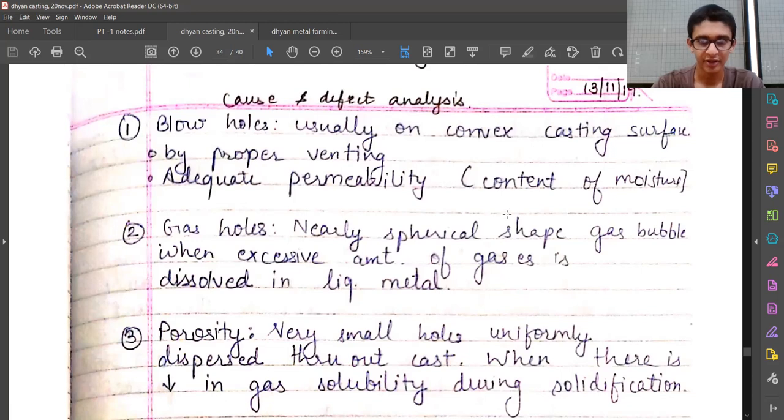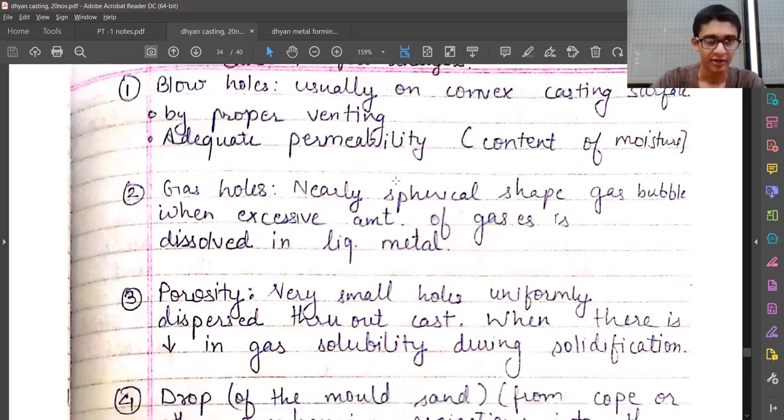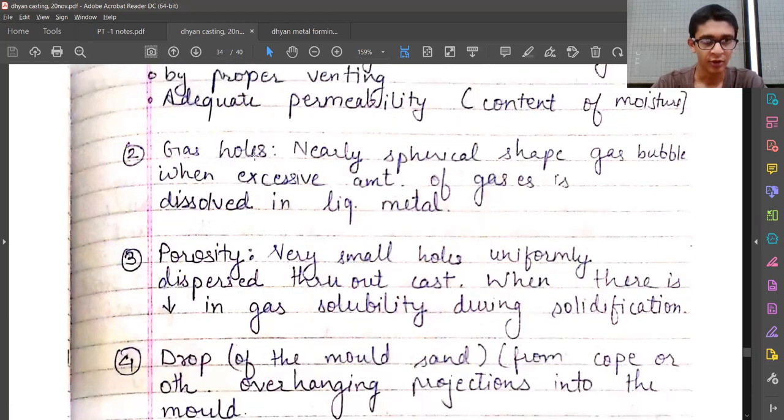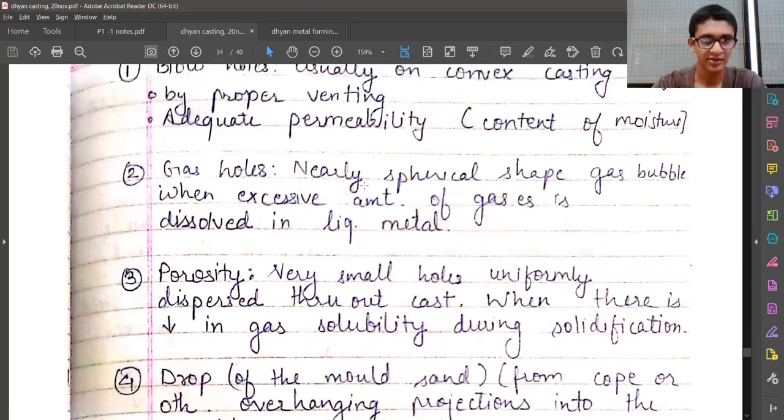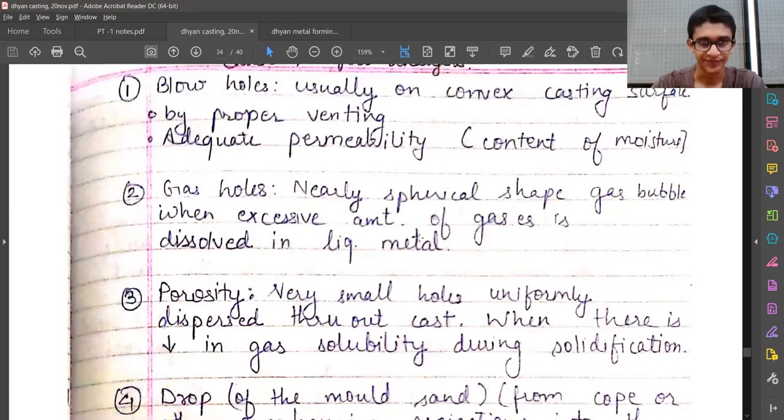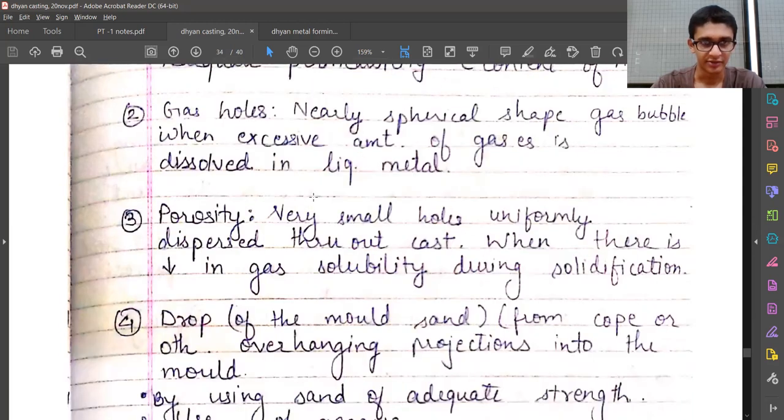The second is gas holes. They are nearly spherical shaped gas bubbles when excessive amount of gas is dissolved in liquid metal. So while preparing the liquid metal we should take care that there is not excess of gas dissolved in it.